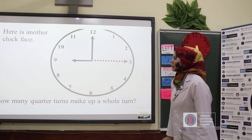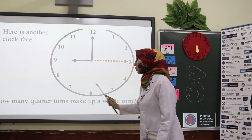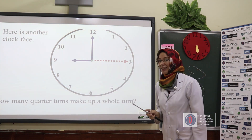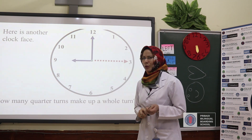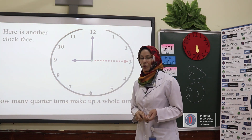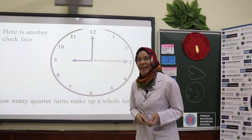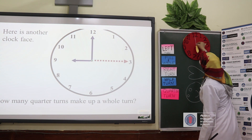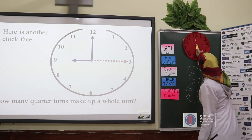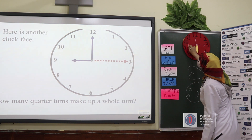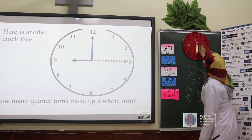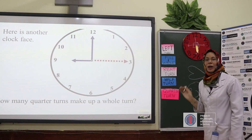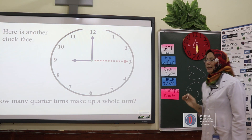Here is another question about a clock face: how many quarter turns make up a whole turn? What do you think — two, three, or four? Yes, you are right. Look at my writing here: we have four right angles and four quarter turns to make a whole turn.